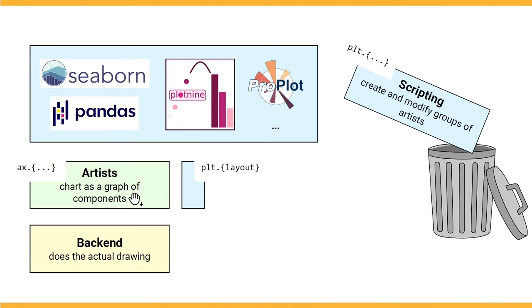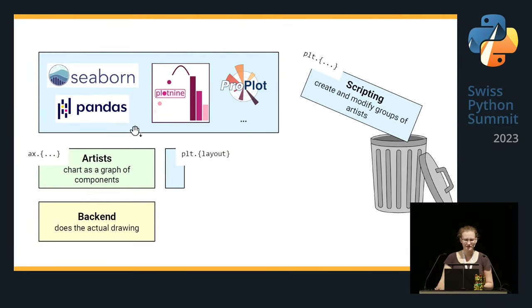If your intuition about how the coding should look like is not really... You just don't like how the artist's API or the object-oriented API works. You can replace it with a different scripting layer. So, for example, Seaborn, Pandas, Plot9, they all have very different APIs. But the good thing is, because they are all based on Matplotlib, they can be used to mix and match together inside one figure. So, I can have a figure where I create one subplot with Seaborn, another subplot with Pandas, and third with pure Matplotlib. And it all interacts well together.